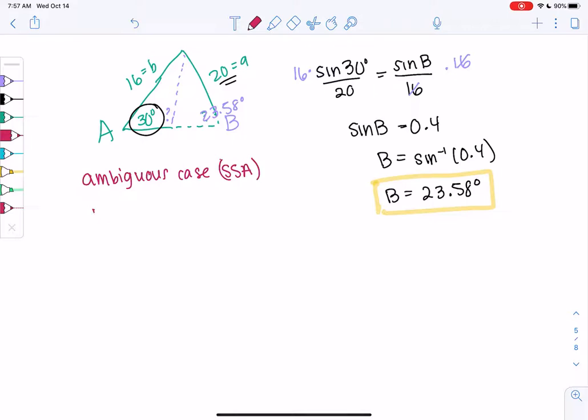So we'll go ahead and find the supplement. So 180 minus the angle we just found, 23.58. I get 156.42.